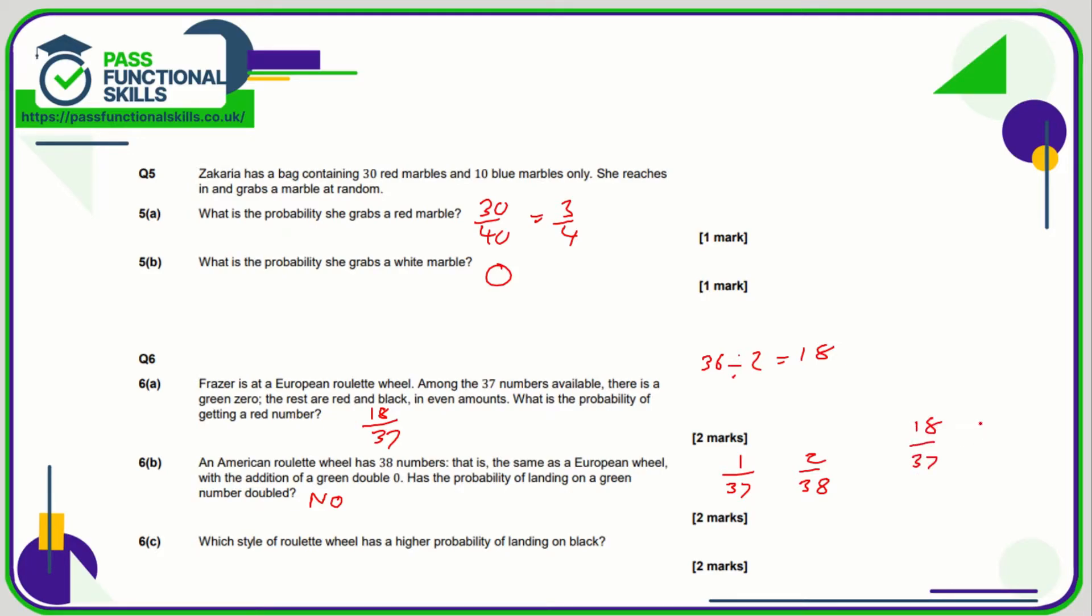Whereas with the American one, due to the extra green one, that's going to be 18 out of 38. So the probability is marginally higher in the European there.